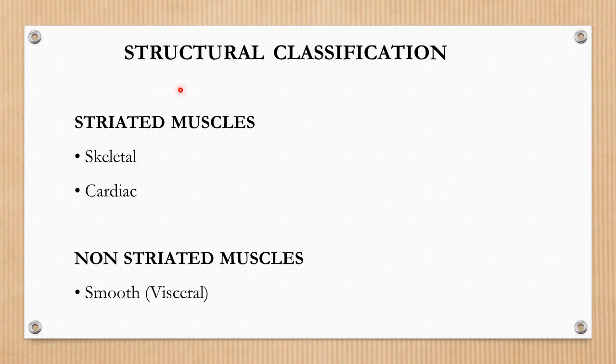Structurally, muscles are classified into striated and non-striated muscles depending upon their appearance, in which microscopically we can see cross striations. These cross striations are developed because of light and dark bands of contractile myofilaments. In the striated muscles, skeletal and cardiac muscles are present.